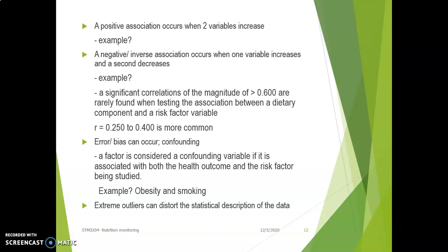The r value ranges from 0 to 1. The closer r is to 1, the stronger the association. For example, if studying more leads to higher exam marks with r = 0.9, this means the association is very strong. Sometimes outliers occur — some may be removed, but sometimes an extreme value may be a cause for concern.